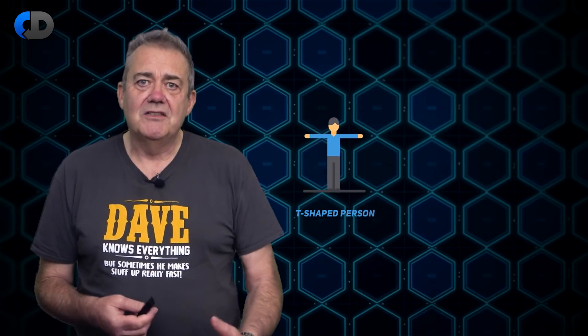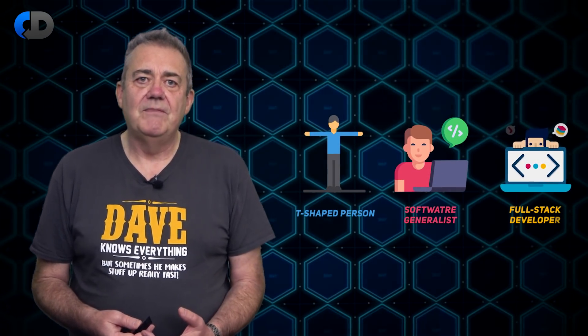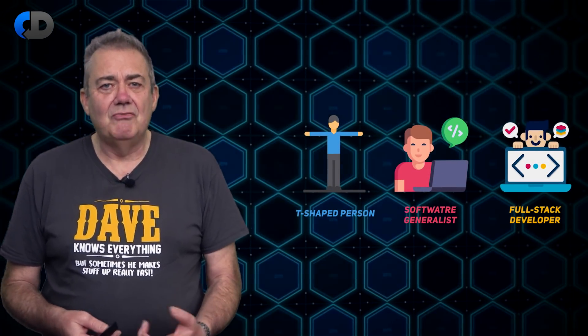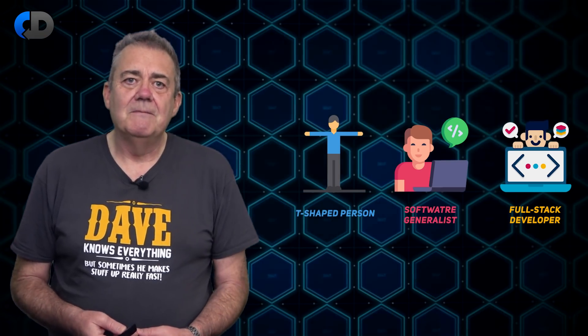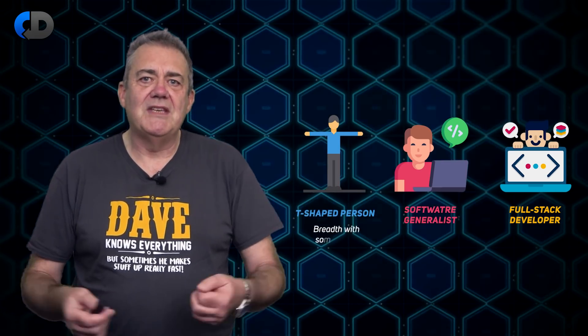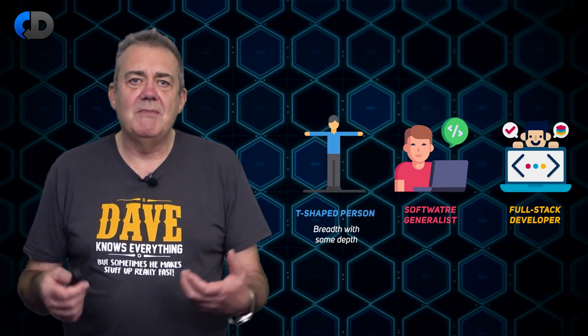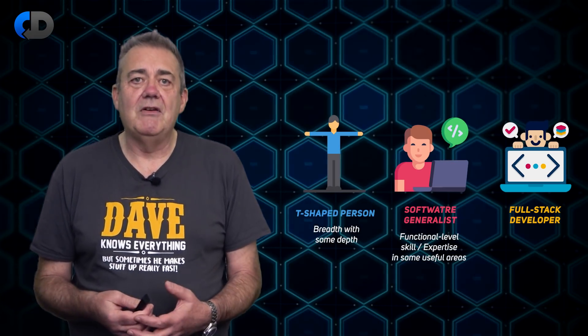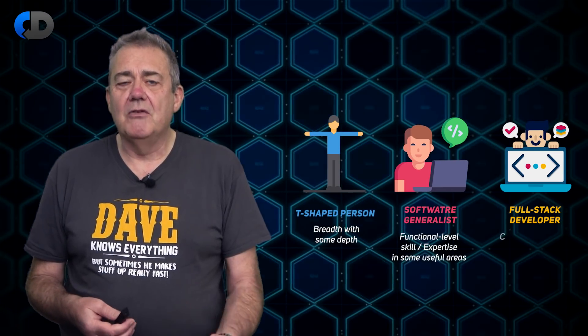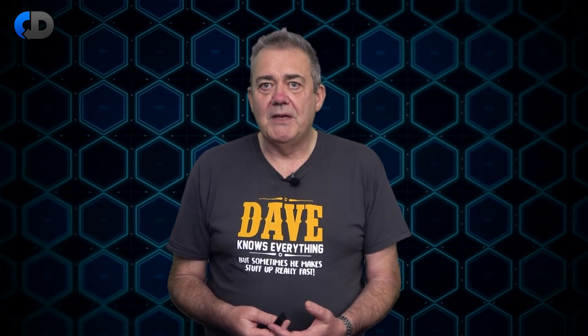We have a habit of sometimes hunting for names for things. Are you a T-shaped person, a software generalist, or a full-stack developer? There is an important idea at the root of all of these names, but I'm not sure that any of them really nail it. T-shaped means breadth with some depth in specific places. Generalist usually means a functional level of skill in a range of useful areas. And full-stack seems to mean that you can write JavaScript in the web browser and on a server. That is how some people seem to describe themselves.